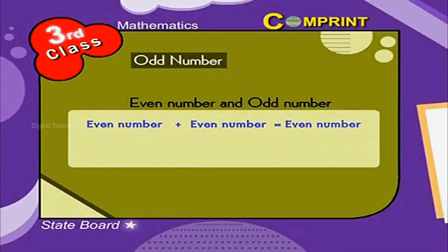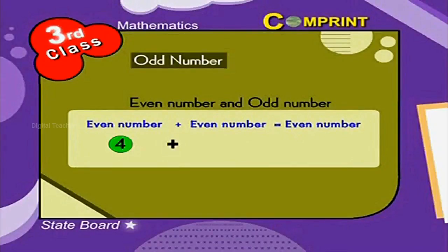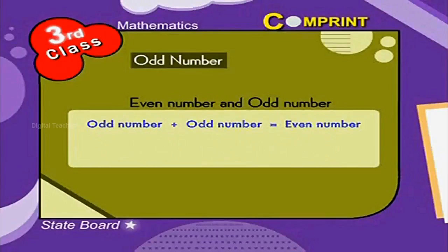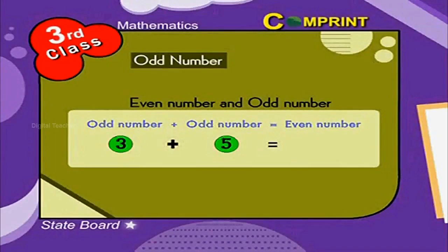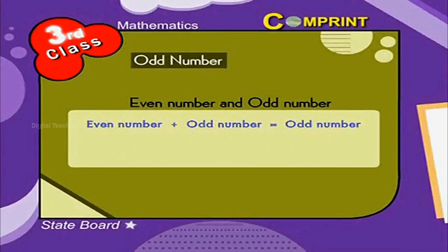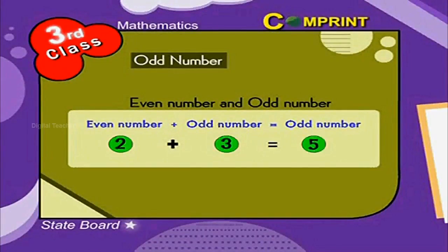Even Number plus Even Number is equal to Even Number. Example: 4 plus 4 is equal to 8. Odd Number plus Odd Number is equal to Even Number. Example: 3 plus 5 is equal to 8. Even Number plus Odd Number is equal to Odd Number. Example: 2 plus 3 is equal to 5.